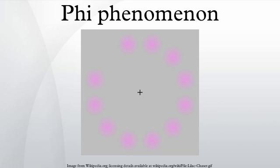Once both images have been projected, the experimenter asks the viewer or audience to describe what they saw. This percept changes with the duration of the lag between presentation of the first and second line. With very little time passing between the two presentations, a viewer will report perceiving the two lines simultaneously.